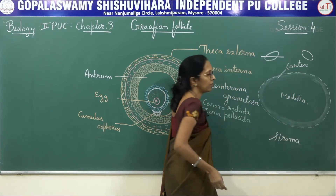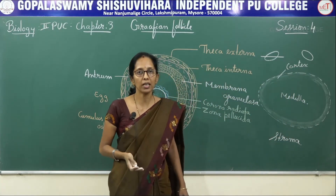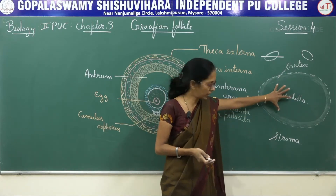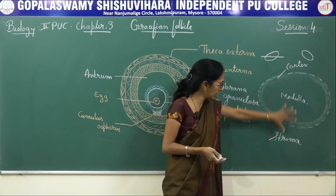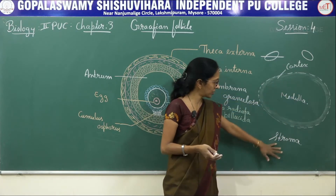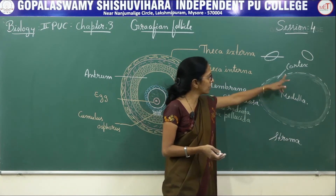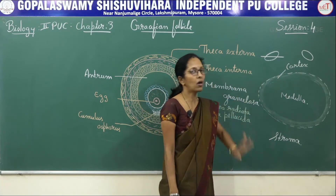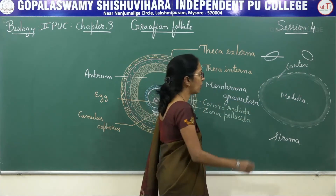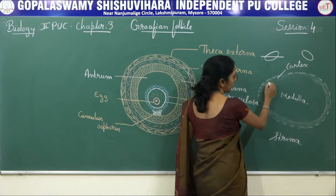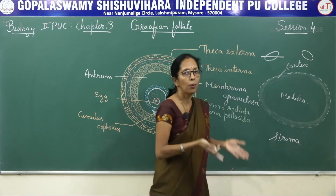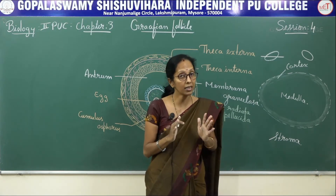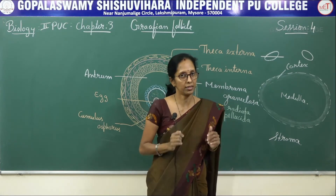So when we take the transverse section of the ovary and observe under the microscope, you can see it is oval in shape and encloses liquid. That complete liquid is said to be stroma, which is differentiated into outer cortex and inner medulla. In the cortex, there is a presence of germinal epithelial cells which undergo both mitotic division and meiotic division, as we studied in oogenesis.